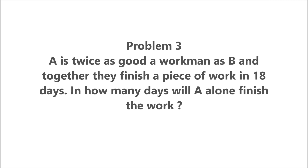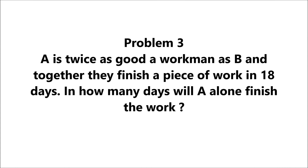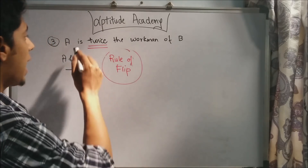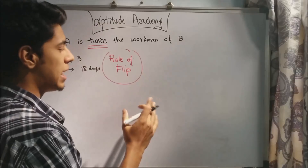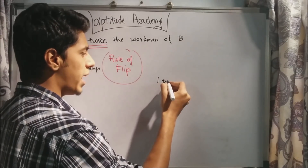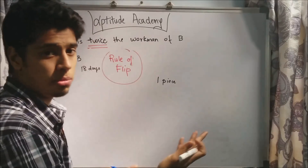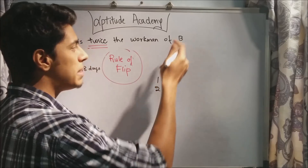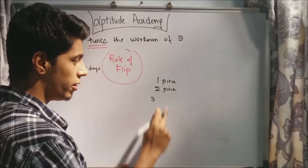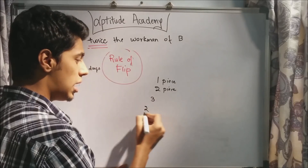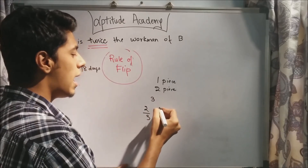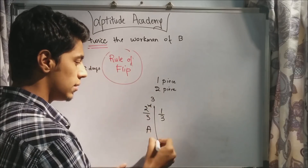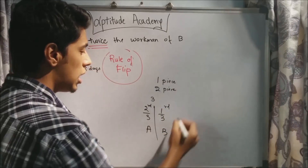Let's move on to problem three. A is twice as good a workman as B, and together they finish a piece of work in eighteen days. In how many days will A alone finish the work? To understand this, let's say B can eat one piece of cake every minute. A is twice the workman of B, so A will eat two pieces for every one piece that B eats. Considering there are three pieces of cake altogether, A will eat two out of three — two by three — and B will eat one out of three.